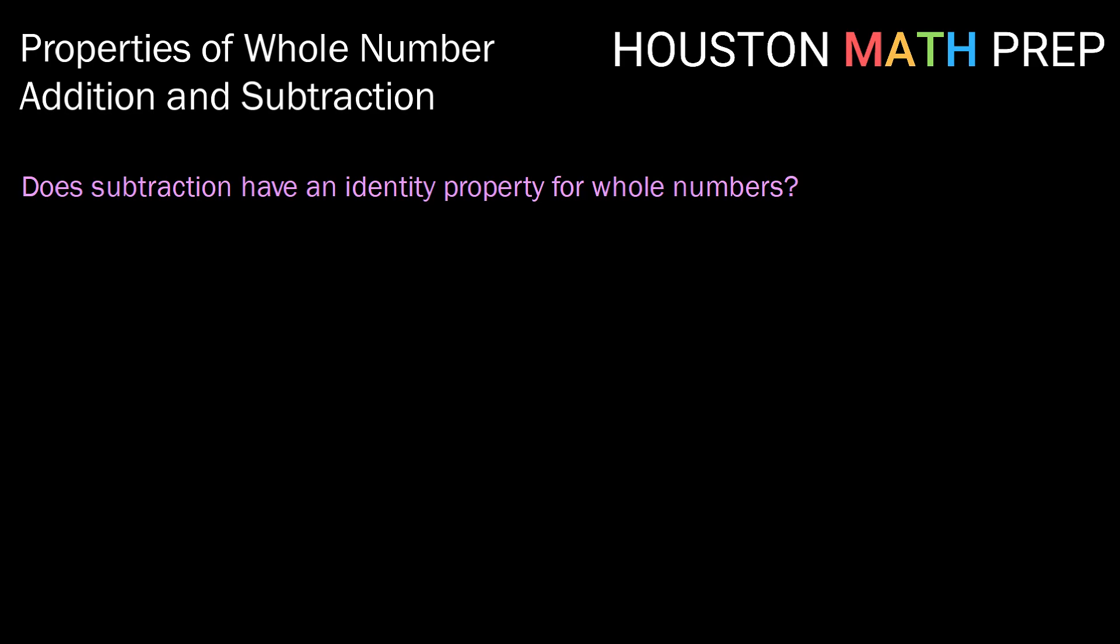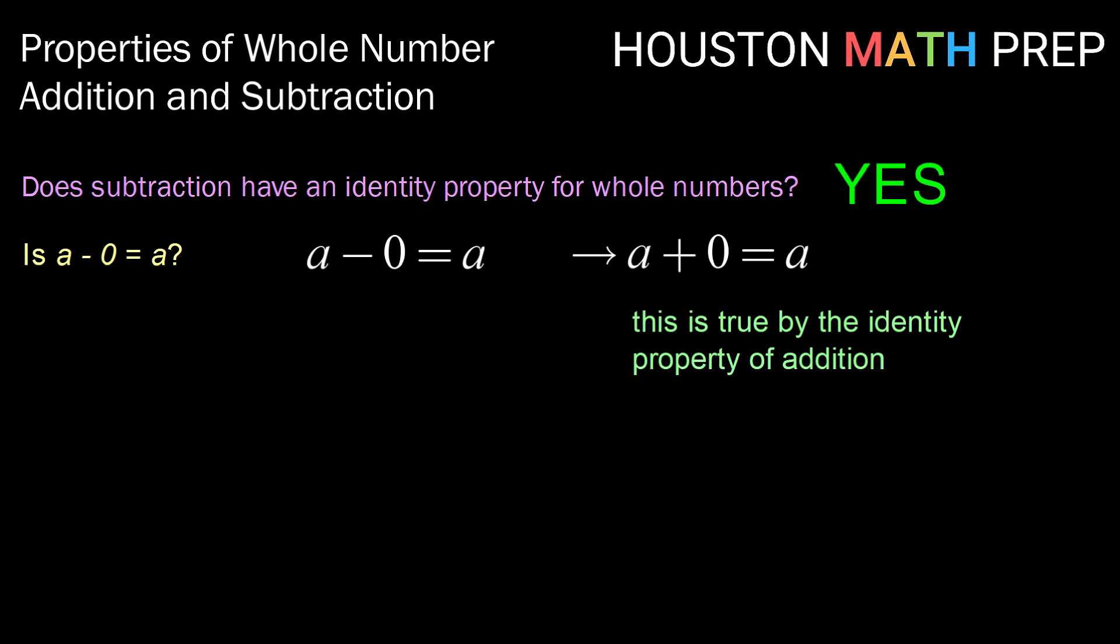Last one. What about the identity property? We've been 0 for 3. Does subtraction have the identity property? Well, essentially what we're asking is, for every whole number a, is a minus 0 equal to a? Well, using our definition of subtraction, if that is the case, then it must be the case that a plus 0 equals a. This is true by the identity property of addition, which we know is true. So the answer is yes. Subtraction does have the identity property for whole numbers.